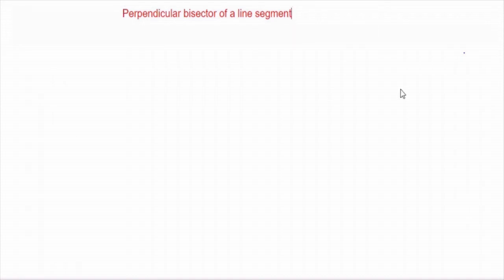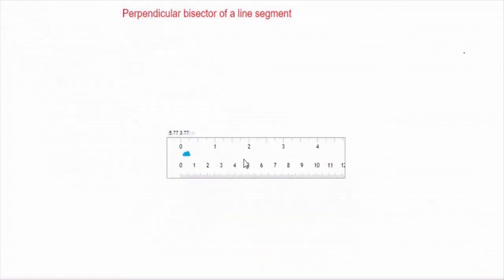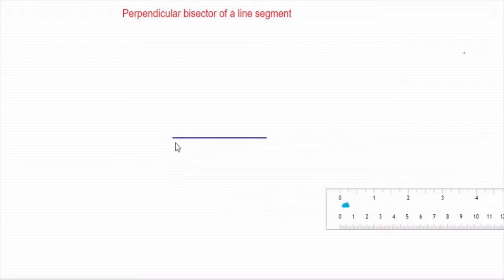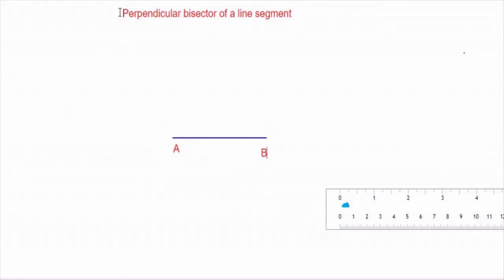All these words are important. Perpendicular means 90 degrees to the given line. 'Bi' means two, and 'sector' means dividing. What is divided here? A line segment. For that I need a line segment first, so I will draw a line segment with the help of a ruler. After drawing the line segment, we are supposed to name it. I would like to give the name AB to this line segment. We are going to divide line segment AB.